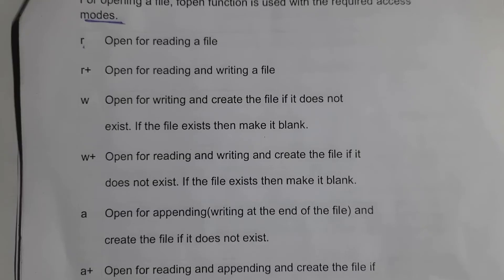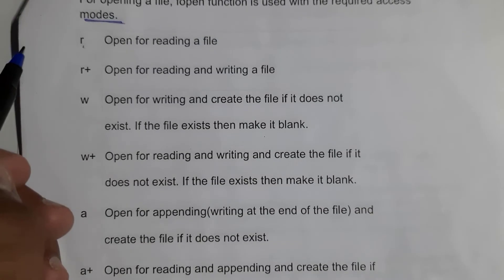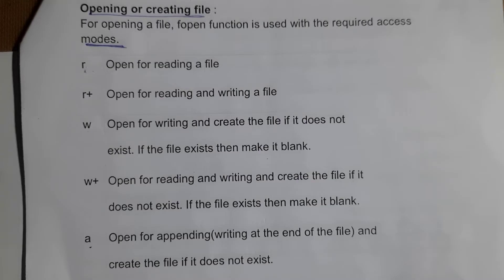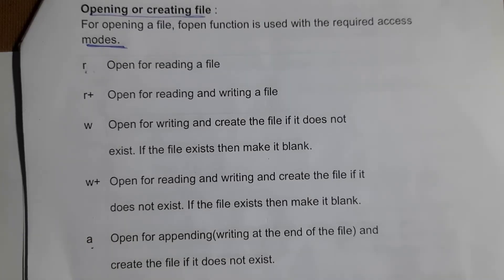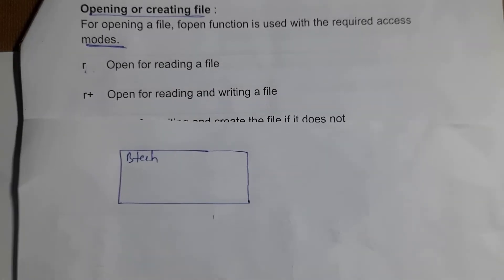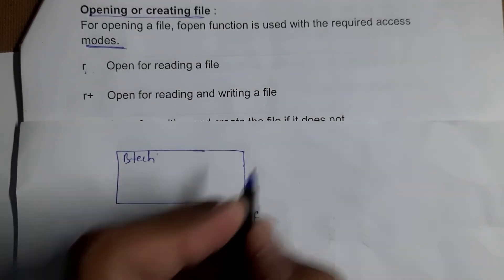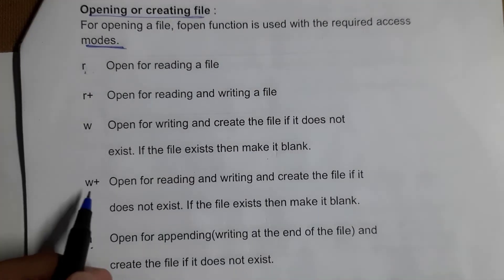The file modes for text files are: 'r' (read mode) — you can only read the file, you cannot add text; 'r+' mode — you can both read and write; 'w' (write mode) — this removes previous text and adds new text; and 'w+' mode — you can both read and write data to the file.